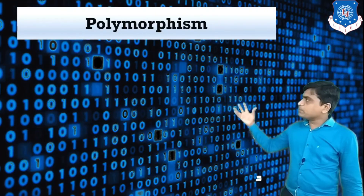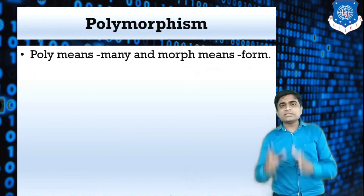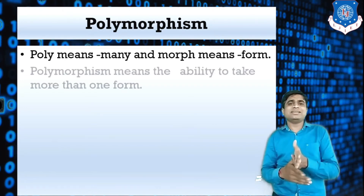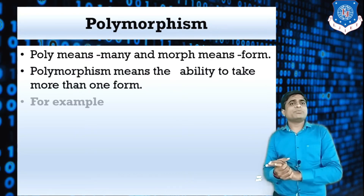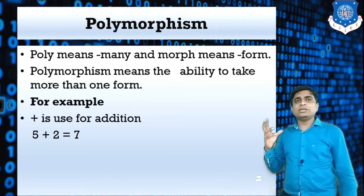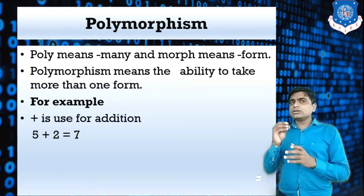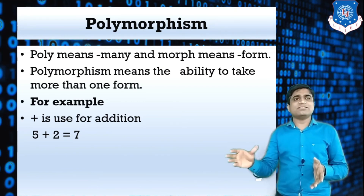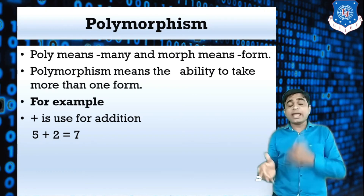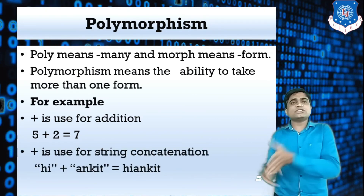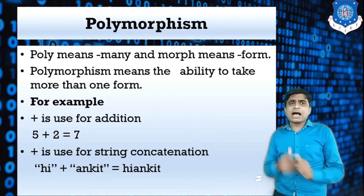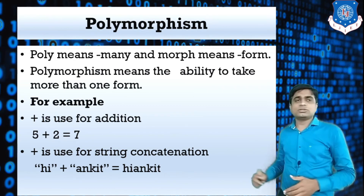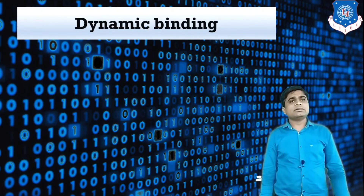Our next concept is polymorphism. As the word tells us — poly means many and morph means form — polymorphism is the ability to take more than one form. For example, take the addition sign. If you use it with digits like 5 plus 2, it produces the result 7. But the plus sign is also used for concatenation of two strings — 'hi' plus 'Ankit' produces 'hi Ankit'. The sign is the same but it has different forms. That is called polymorphism.